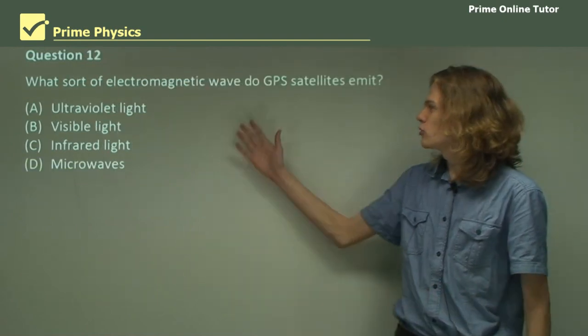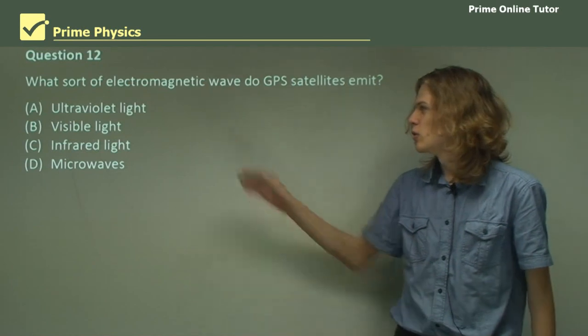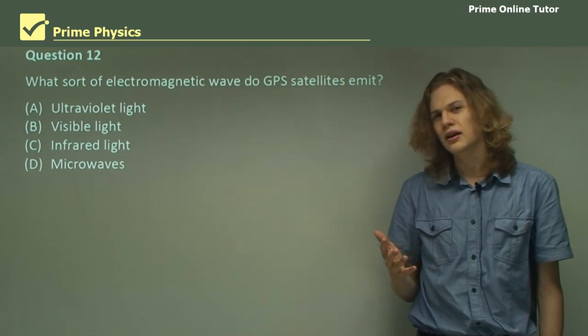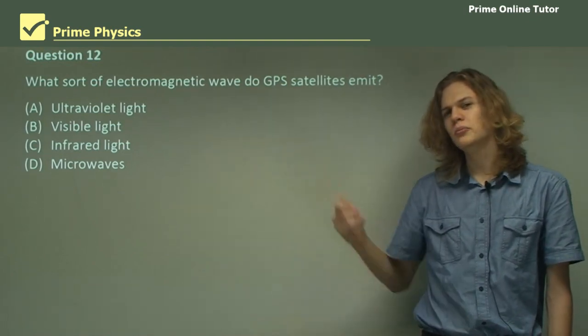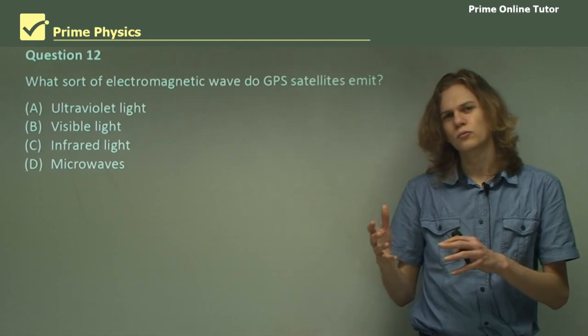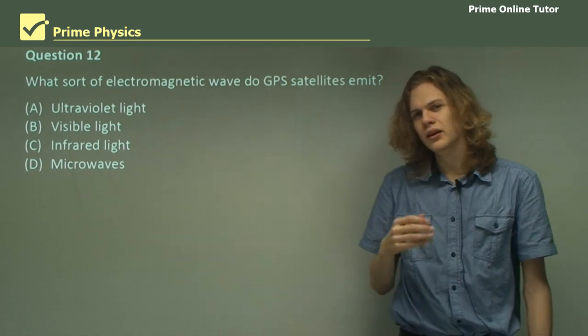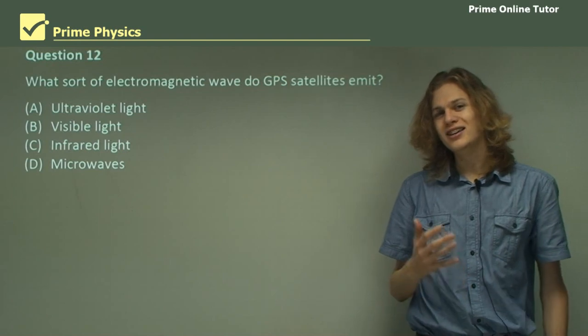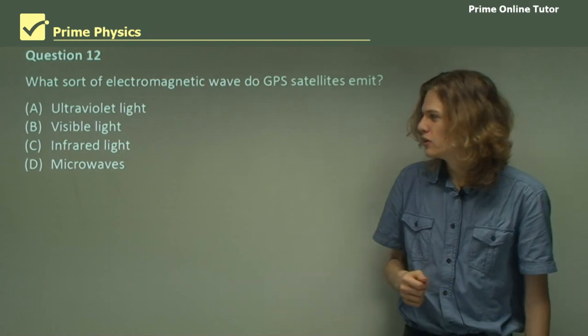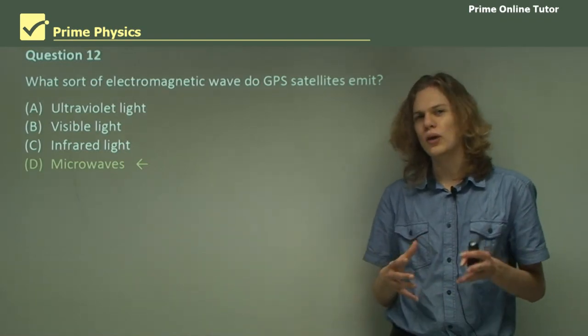Question 12. What sort of electromagnetic wave do GPS satellites emit? We have ultraviolet light, visible light, infrared light, or microwaves. We know from our study on electromagnetic waves that the Sun produces most of these, but a lot of them get blocked by the atmosphere. The three brightest wavelengths that get through are ultraviolet light, visible light, and infrared light. So because these are emitted by the Sun and are so bright, any signals emitted by a satellite in these wavelengths would get swamped out pretty fast. So for this reason, we use microwaves, that is, very short wavelength radio waves, to transmit data.